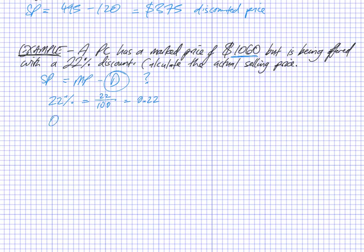Now I can work with the decimal, because 22% of something is 0.22 of it, and I want to work out what 22% of $1,060 is, which I can find from multiplying 0.22 lots of $1,060. So it's going to be $233.20 discount.